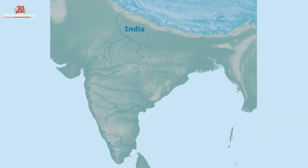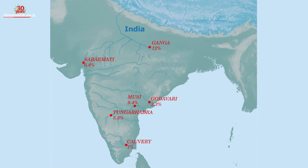So, dissolved oxygen level for Kaveri is likely to drop by 1 percent, 3.3 percent for Godavari, 5.3 percent for Tungabhadra, 6.4 percent for Sabarmathi, 9.4 percent for Musi, 12 percent for Ganga, and 12.5 percent for Narmada Basin.